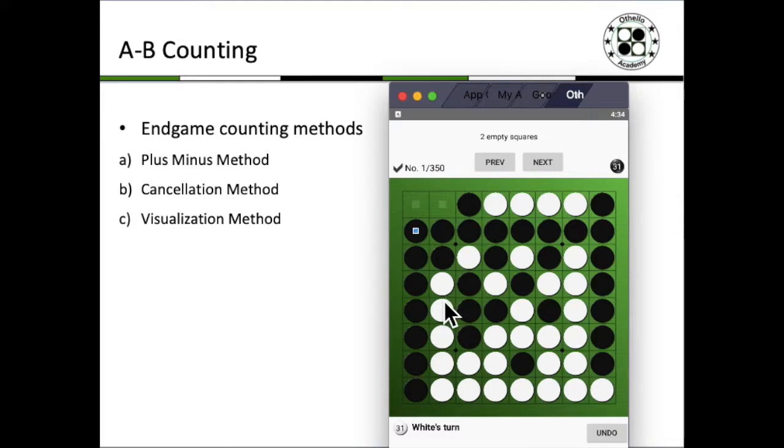In the visualization method, which is probably one of the hardest methods to employ in position counting, you visualize the entire shape on the board after the two moves that you're simulating, and you basically visualize the entire outcome and count off the squares. Usually, the visualization method in a more complex situation almost seems impossible to do unless you have a very good visualization capability.